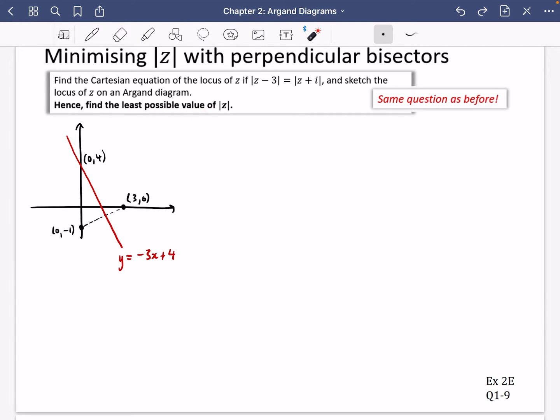find the least possible value of the modulus of z. So remember what it's talking about here. This z, this z is any point on the line. I'm going to say on the red line, because if z is on any of these points, it satisfies the equation of modulus of z minus 3 equals the modulus of z plus i. But we're now trying to find what is the smallest possible value of the modulus of this blue dot, of this z number.